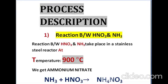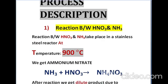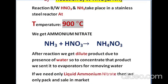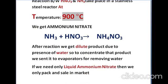Process Description — detail of each manufacturing step. The first step is the reaction between HNO3 and NH3, which takes place in a stainless steel reactor at 900°C, giving us ammonium nitrate. After the reaction, we get a dilute product due to the presence of water, so we send it to evaporators to remove water vapors. If we only need liquid ammonium nitrate, it is packed and sealed in containers after this first reaction.